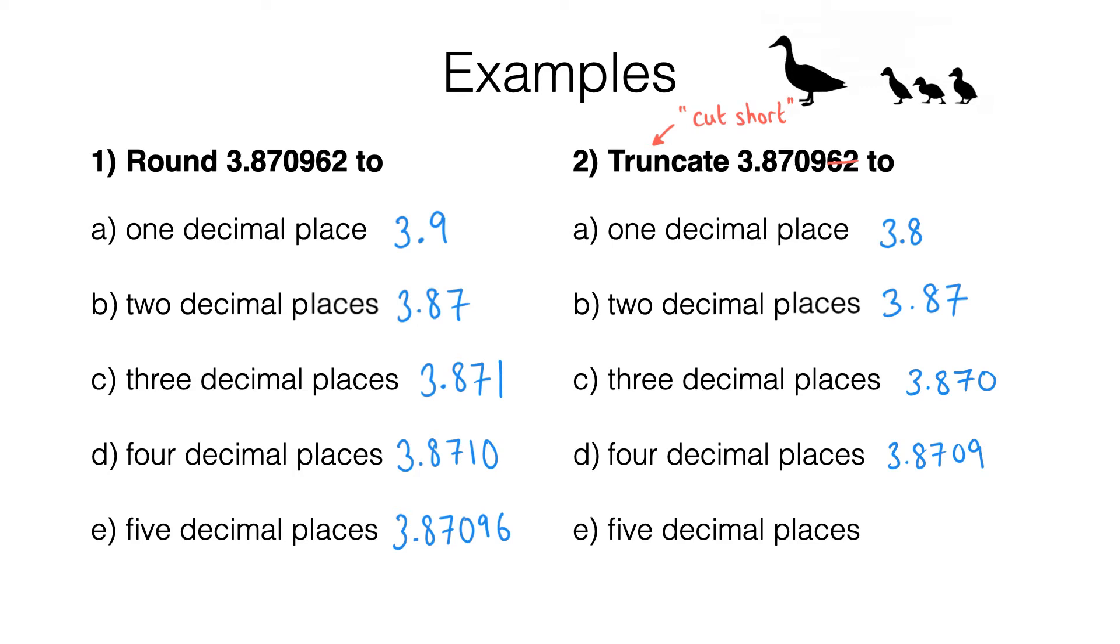Finally, for part E, by cutting off anything after the fifth decimal place, you should have got 3.87096.